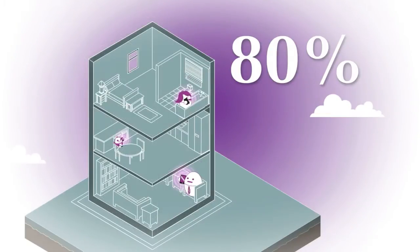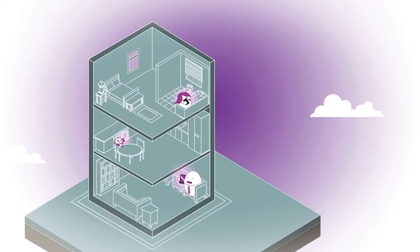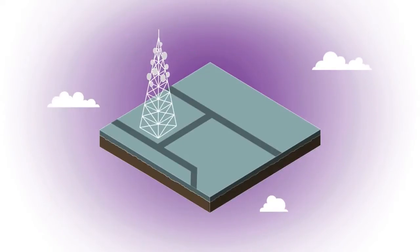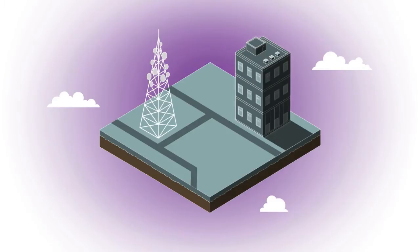Over 80% of all mobile phone usage occurs indoors, but achieving quality wireless coverage is becoming increasingly difficult as construction materials shield buildings from wireless signals.